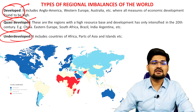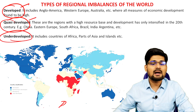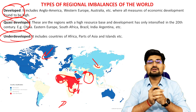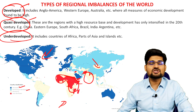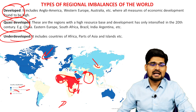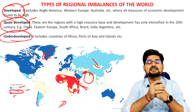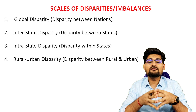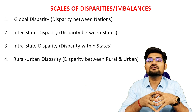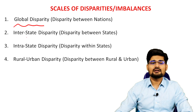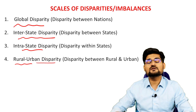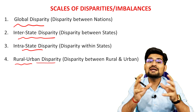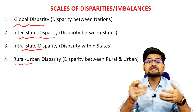Types of regional imbalances on the world map include developed, quasi-developed, and underdeveloped as three broad categories. You can observe deep blue for developed, lighter blue for transitioning, yellow for developing, and red for underdeveloped third-world regions. The scale of this disparity also varies — geography is about scaling as well. Global disparity, interstate, intra-state, and local rural-urban disparity are the levels we are talking about when we say regional imbalances.